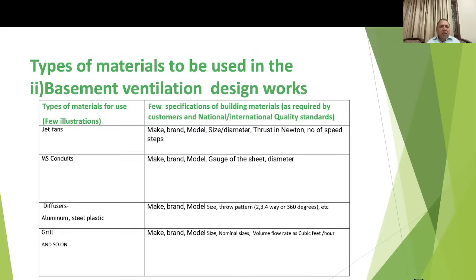For basement ventilation, the main key items are jet fans, MS conduits, diffusers, and grills. For jet fans, specify make, brand, size, diameter, thrust in Newtons, number of speed steps — and a similar concept applies for centrifugal fans. For conduits, specify make, brand, model, gauge of sheet, and diameter.